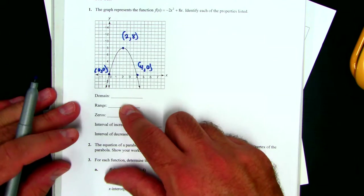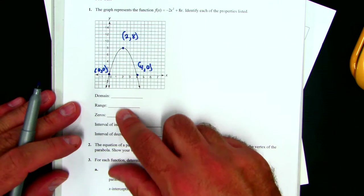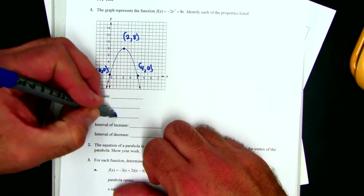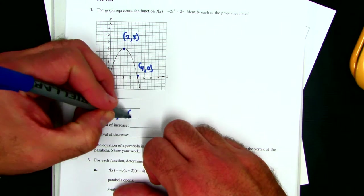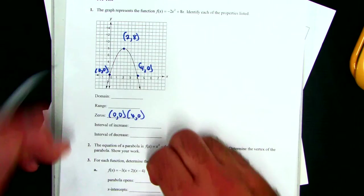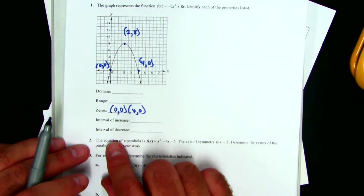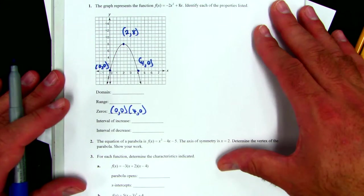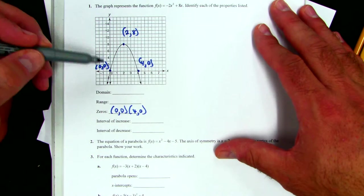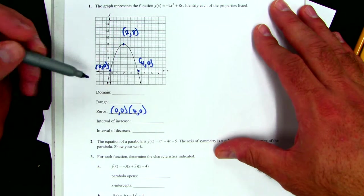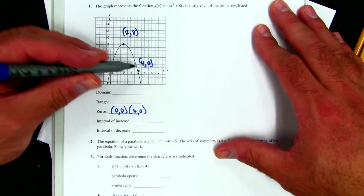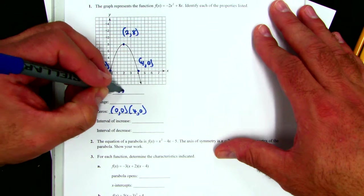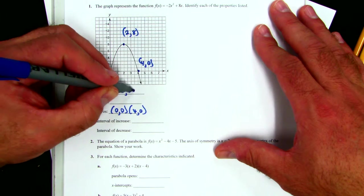All right, so now we go through and we do the domain, the range, the zeros, which we've already done. We've just got to put them down here. And then the interval of increase, the interval of decrease, and this is when we have to use our interval notation. So that means you're supposed to follow how many x's could possibly be the answer, because the domain would be all of your x answers. And this answer is all real numbers, or negative infinity to positive infinity.